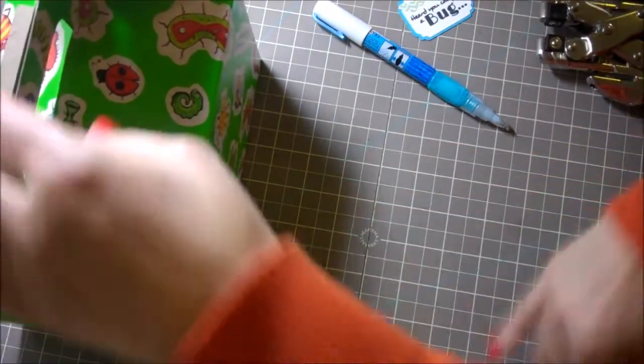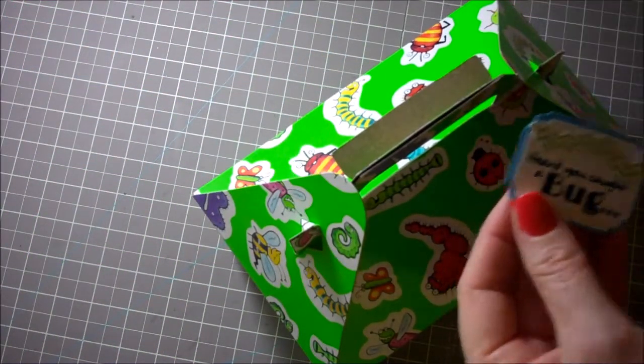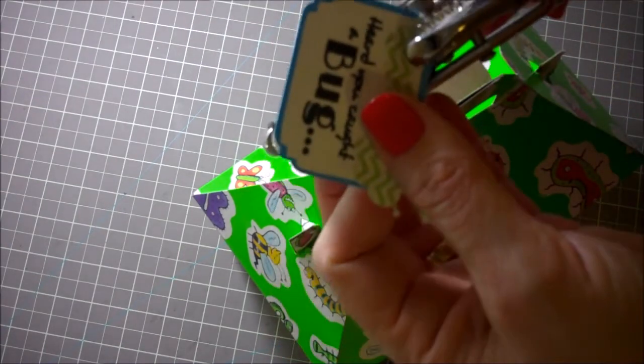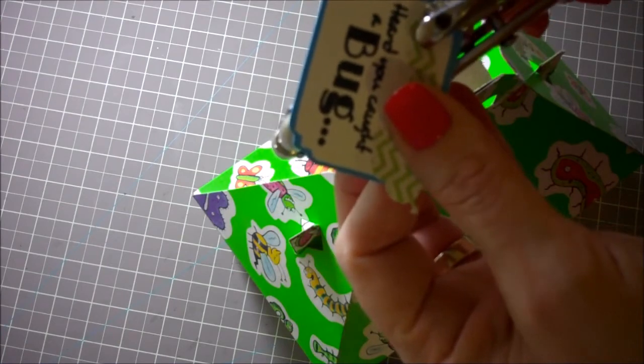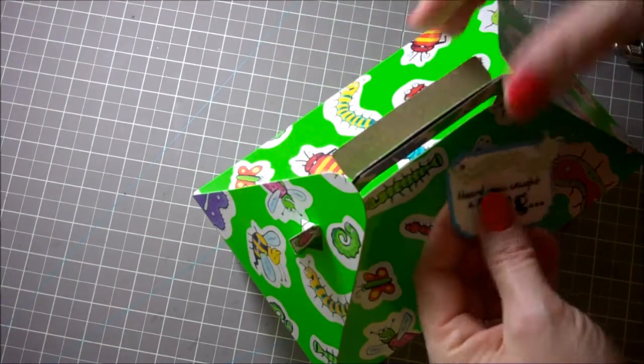So now we need to adhere it onto our little box. So I'm going to use one of this little We Are Memory Keepers hole punch. So I'm just going to punch it even though it's going right through the little caterpillar. I'm okay with that.